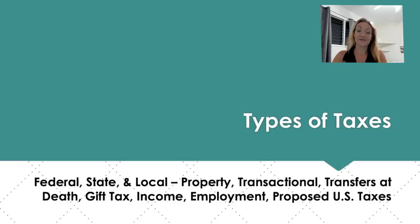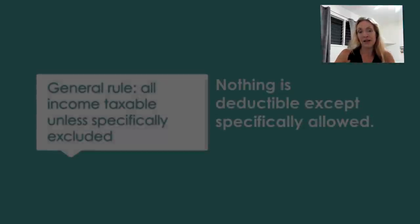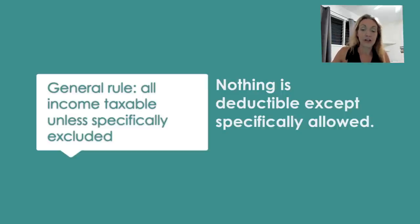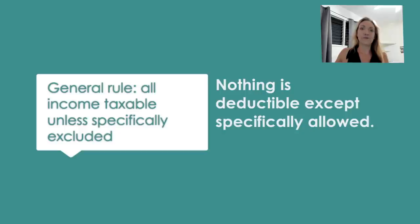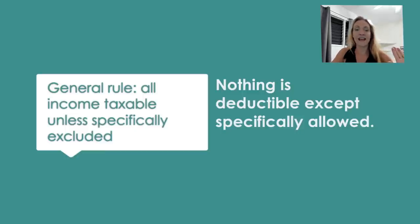Now we're looking at types of taxes: federal, state, and locality — different locational taxes. Then we have property, transactional, transfers at death, gift, income, employment, and some proposed taxes. The general rule to be aware of: all income is taxable unless specifically excluded by the IRS code. Nothing is deductible unless specifically allowed. Everything you receive is included for taxes unless it's excluded, and nothing is deductible except what is specifically allowed to be deductible.